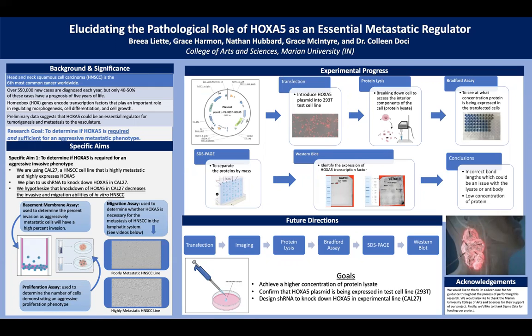To begin this process, we started by designing a plasmid containing the HoxA5 gene. If you look in the experimental progress box in the upper left-hand corner, you'll see the HoxA5 gene in green, and you'll also see the V5 tag, which is an important component of our plasmid that we'll use later in the Western blot phase. We began by introducing our HoxA5 plasmid into the 293T test cell line.